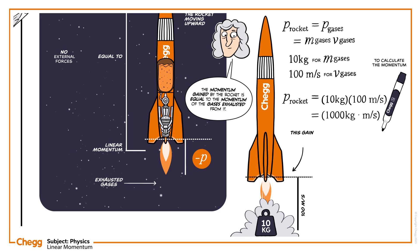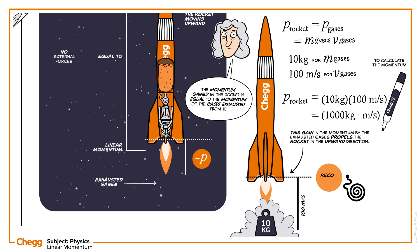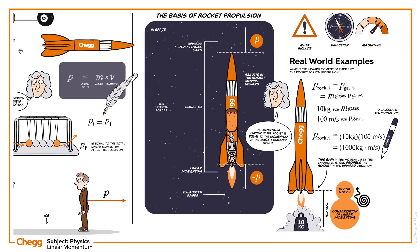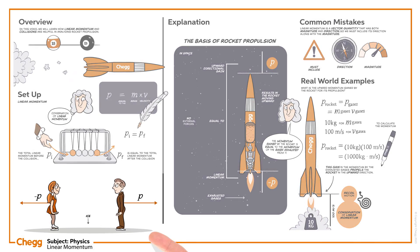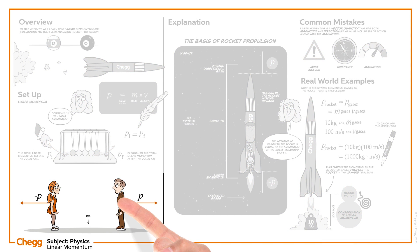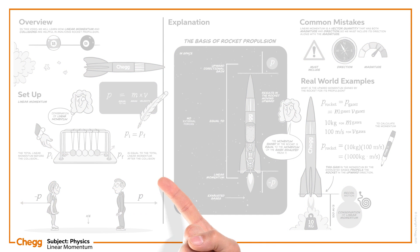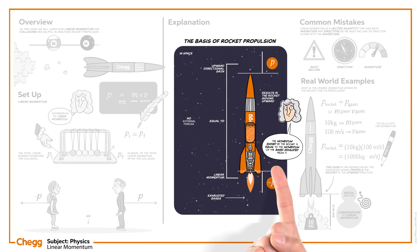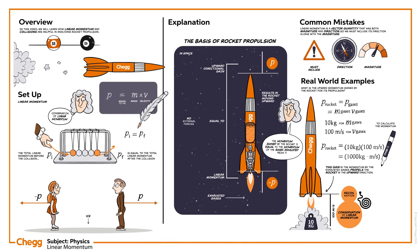This gain in momentum by the exhausted gases propels the rocket in the upward direction. Hence, rocket propulsion is an application of recoil motion and the conservation of linear momentum. With this, we've covered the basics of rocket propulsion from recoil motion and conservation of linear momentum.